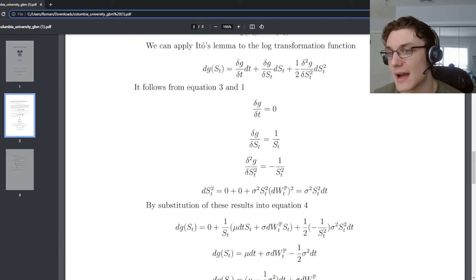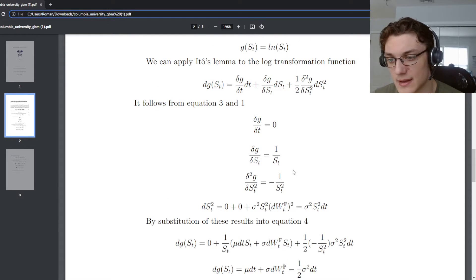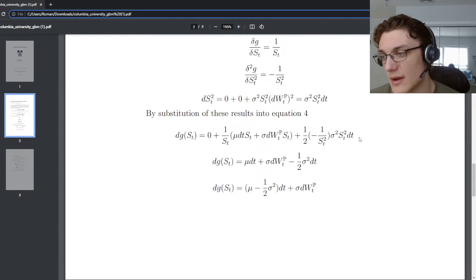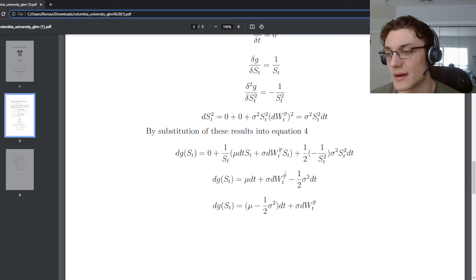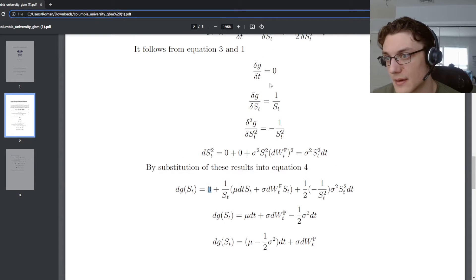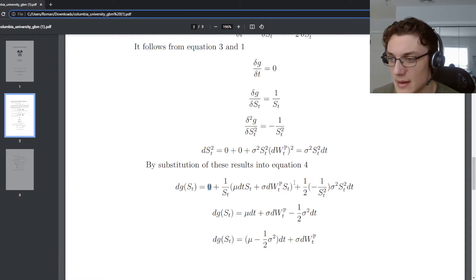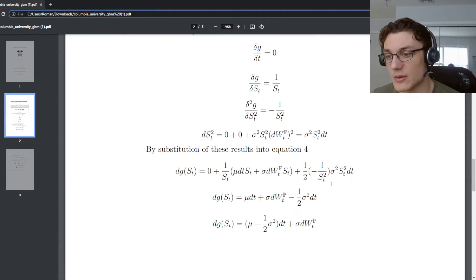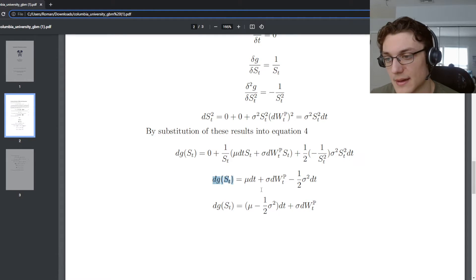Now we can substitute in these values into equation four. If we do that, you'll notice we get something very nice happening. We have all of the S of t's cancelling out. So that's great. We have this one over S of t, that's the partial with respect to the process, the second order partial with respect to the process, and then that zero for the partial with respect to time. So if we distribute, then we cancel out all of the S of t's. That's what's happening here.